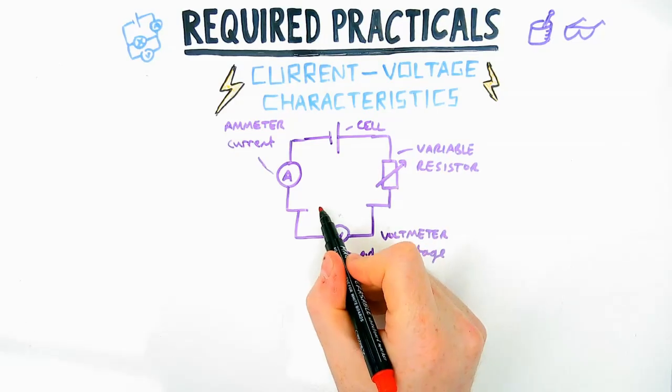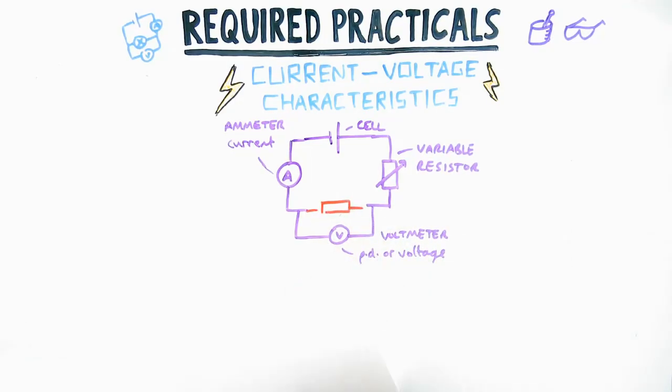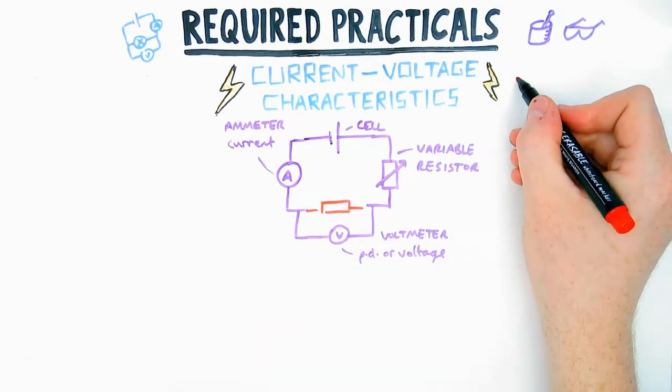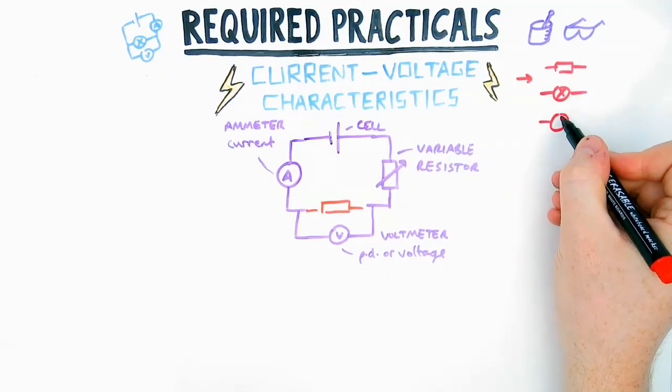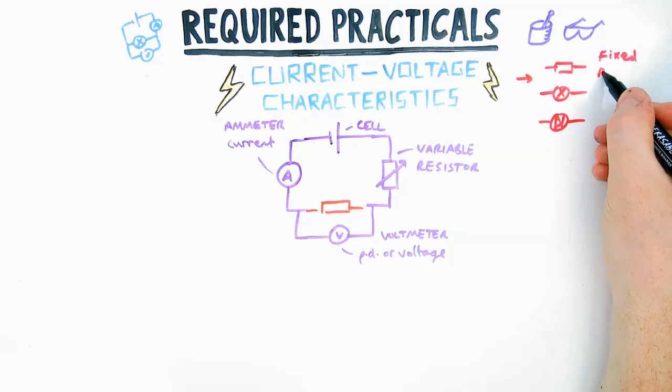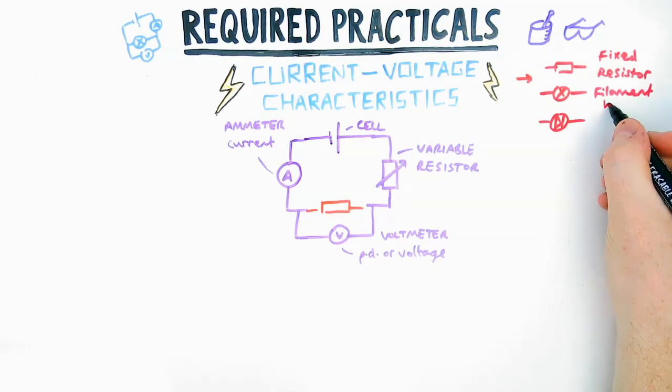The components you could be asked to talk about - there are three of them. You could be asked to talk about a fixed resistor, that's the rectangle. The circle with a cross in it is a filament bulb or lamp. And the third one is a diode or could be a light emitting diode.